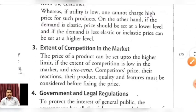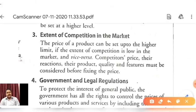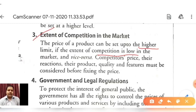The third factor which influences the determination of price is the extent of competition in the market. This is a very important part. The price of a product can be set at a higher limit if the extent of competition is low in the market — for example, if there is no substitute available or if other companies have not launched the product, then you can charge a high price. But if competition is high, you cannot set price at a higher limit.